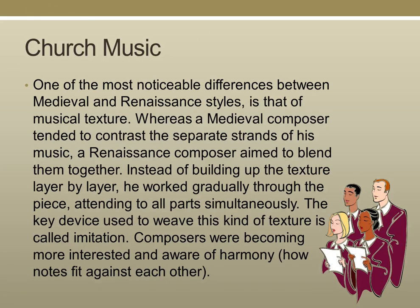One of the most noticeable differences between medieval and Renaissance styles is that of music texture. Whereas a medieval composer tended to contrast the separate strands of his music, a Renaissance composer aimed to blend them together, working gradually through the piece attending to all parts simultaneously. The key device used to weave this kind of texture is called imitation. Composers were also becoming more interested in harmony — how the notes actually fit together against each other.